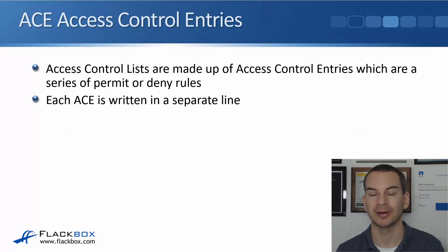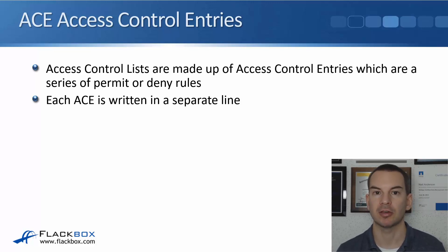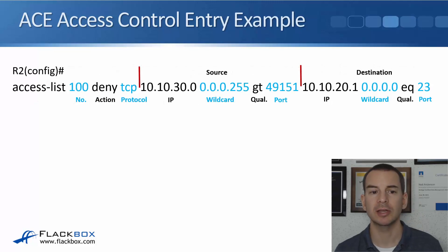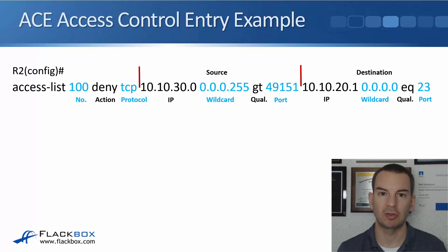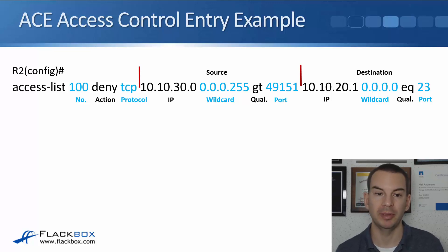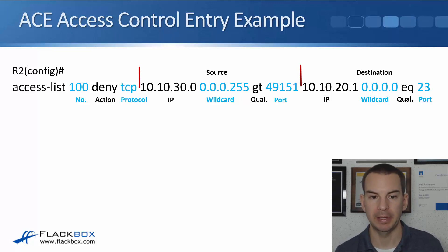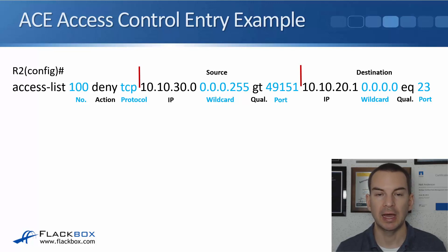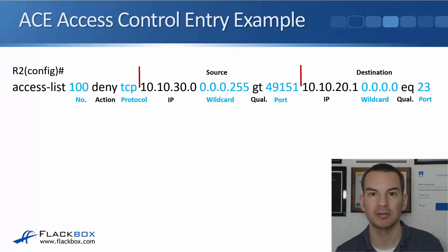Access control lists are made up of access control entries - ACEs - which are a series of permit or deny rules. Each ACE is written on a separate line that makes up the ACL. The command syntax starts with 'access-list', then a number such as 100, then the action which will be permit or deny, then the protocol such as TCP, UDP, or ICMP. Then we get to the source section with a field for the IP, the wildcard mask, a qualifier such as less than, greater than, or equal, and then the source port number.